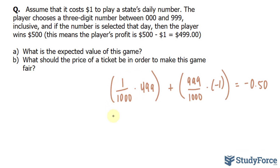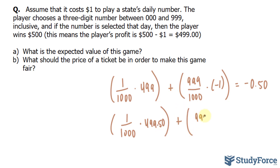We recalculate the equation: it's 1 over 1,000 times 500 minus 0.50, which makes 499.50, plus the probability of losing — 999 over 1,000 — times negative 0.50. If you multiply this all out, just as we did in part A, you should end up with a value of zero. And by definition, this expected value means that the game is fair. So only if you pay a price of $0.50, or 50 cents, is this ticket fair.